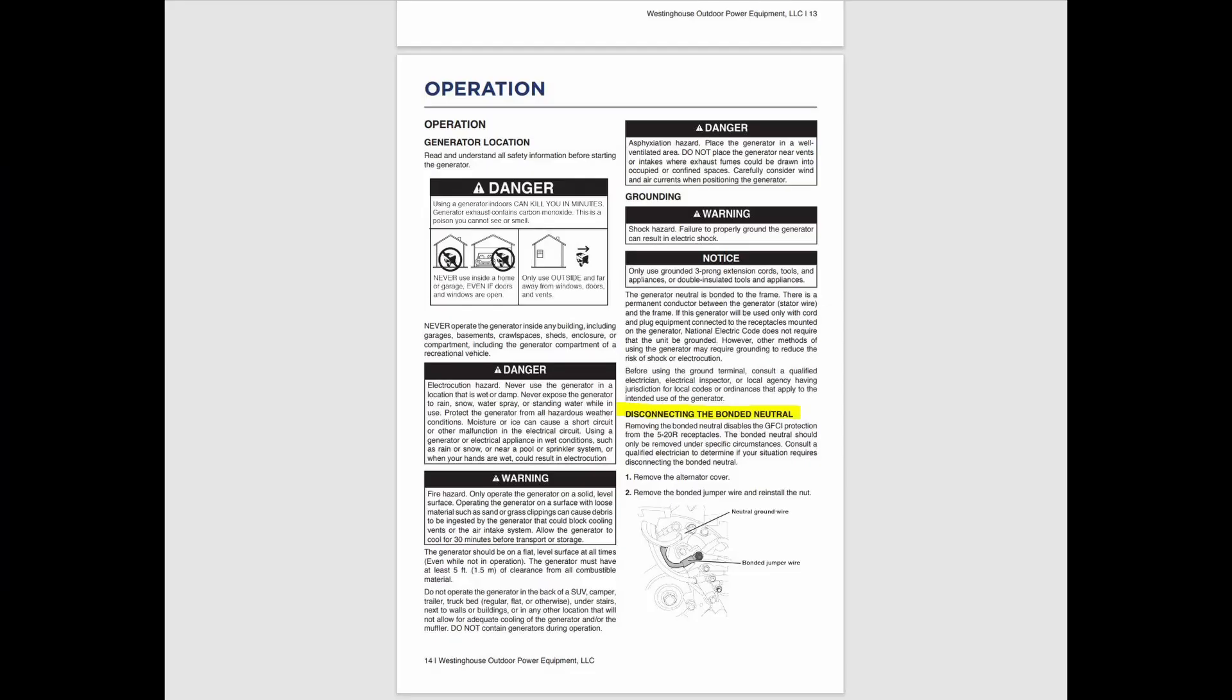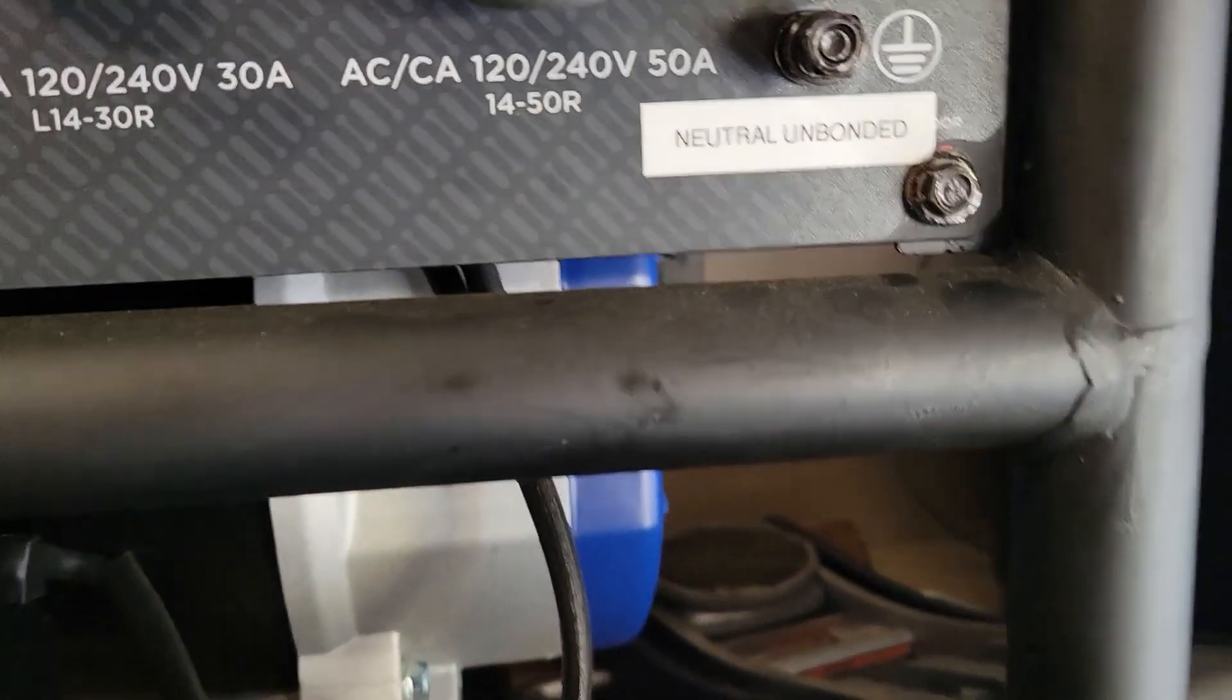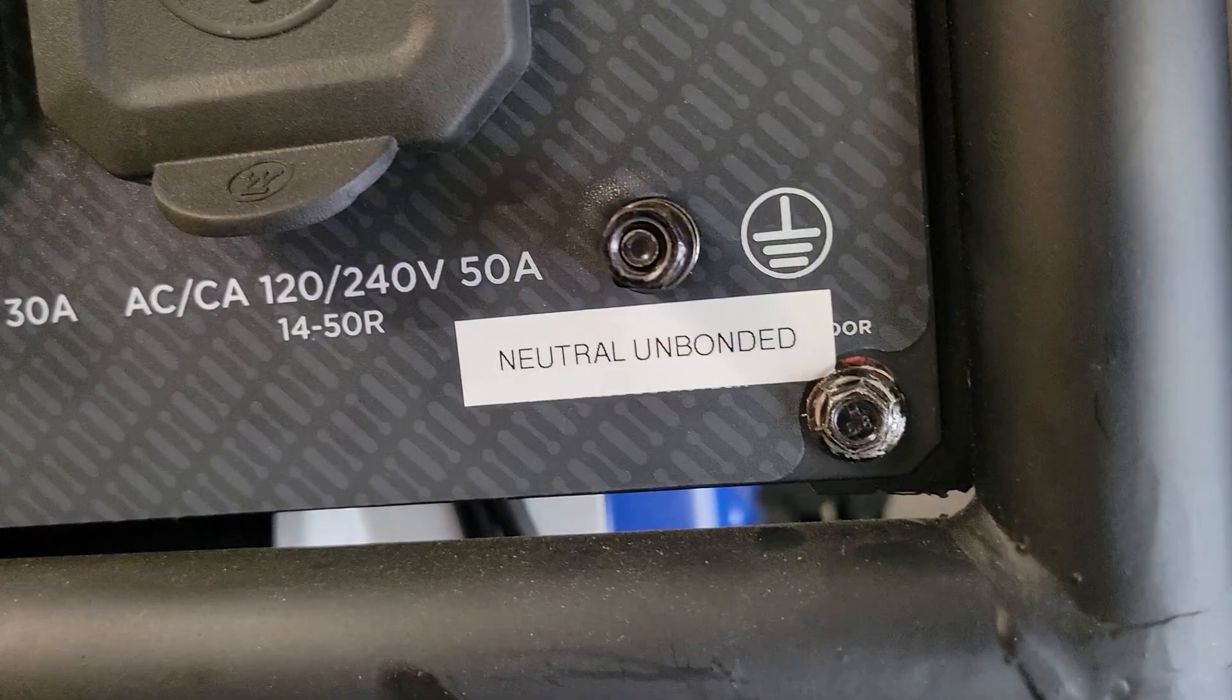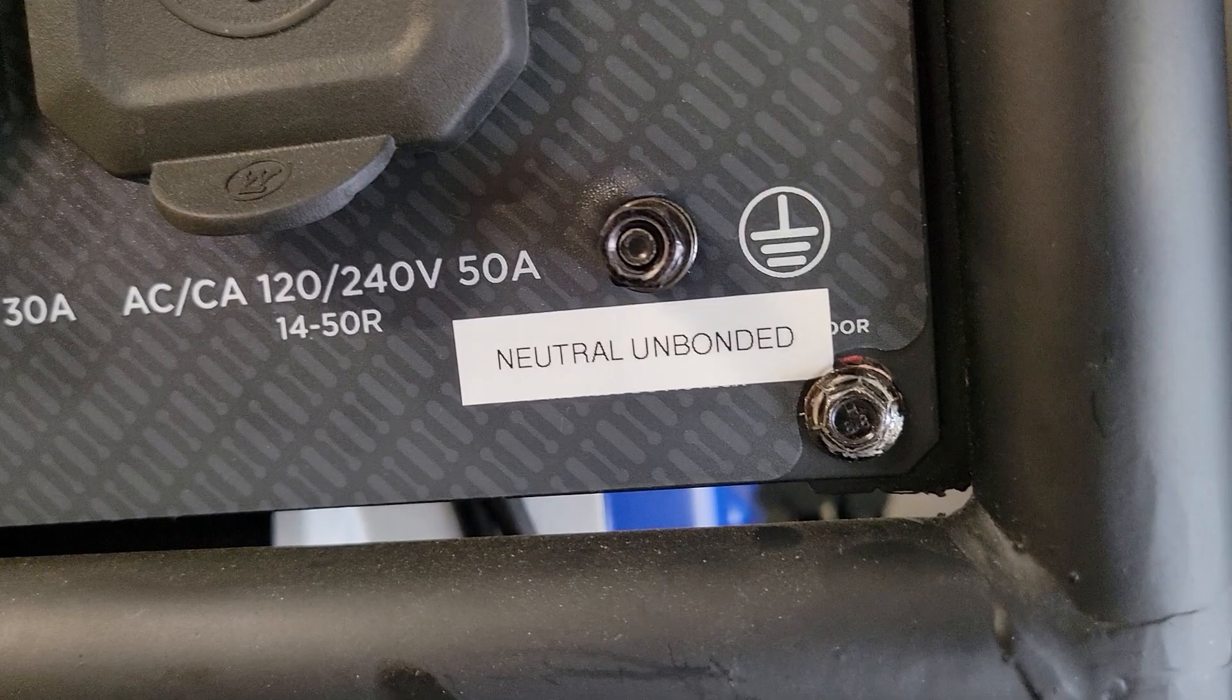Refer to your user manual for instructions on how to remove this bonding jumper. When you do this modification, you are required to install a new sticker on your generator. This is a code requirement.